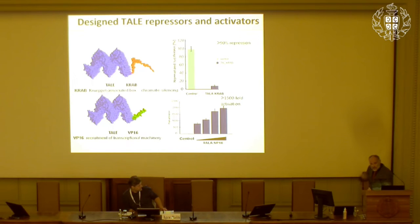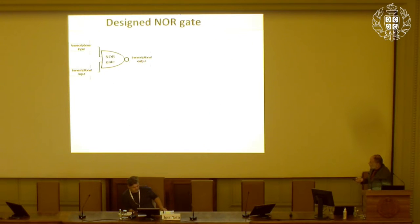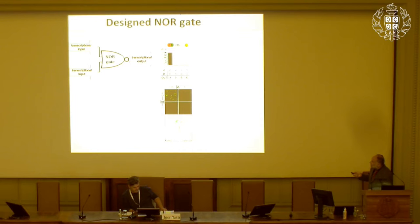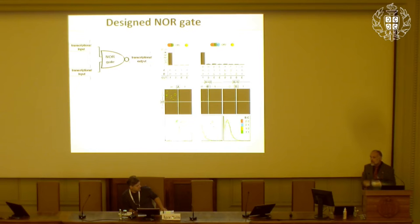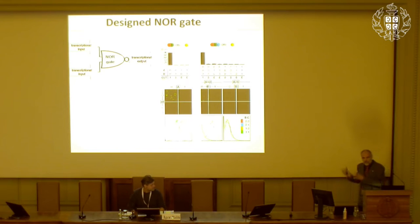We can also introduce binary logic similar to electronic circuits, such as NOR gates, which we can implement by positioning two types of repressors upstream from the reporter — the output is active only if none of the two signals are present. We can extend this to triple NOR gates. NOR gates are functionally complete logic functions, meaning we can make any type of logic gate using just NOR gates. In fact, the guidance computer on Apollo 11 consisted only of triple NOR logic gates.